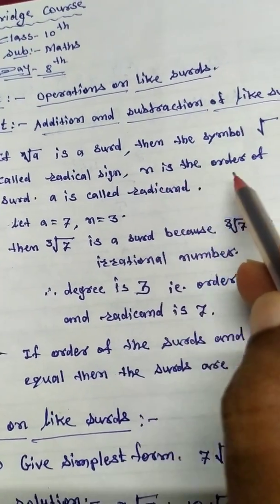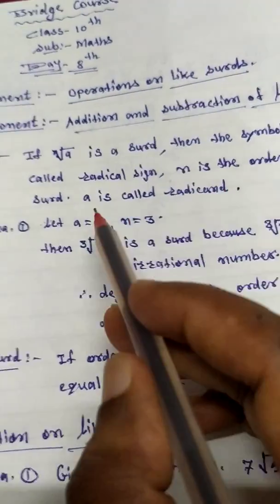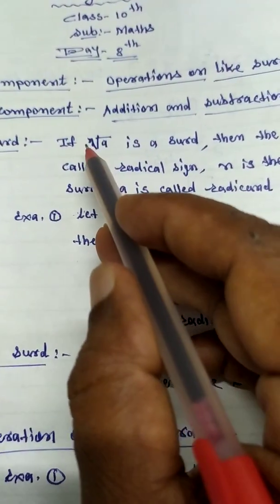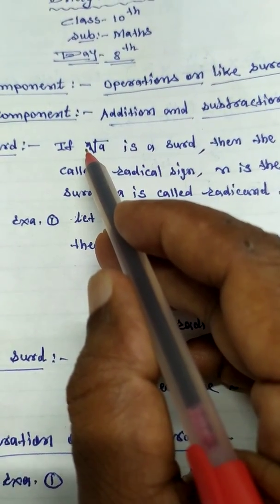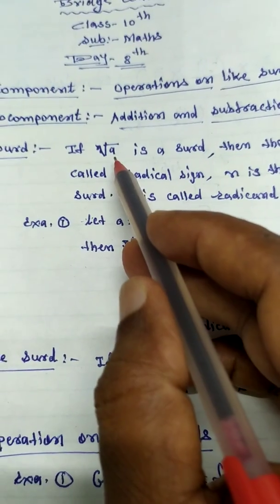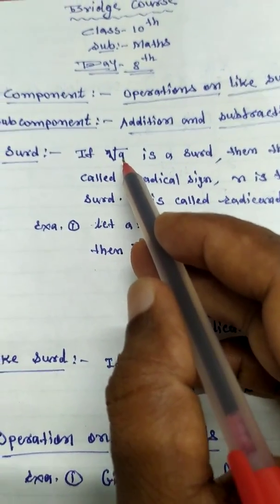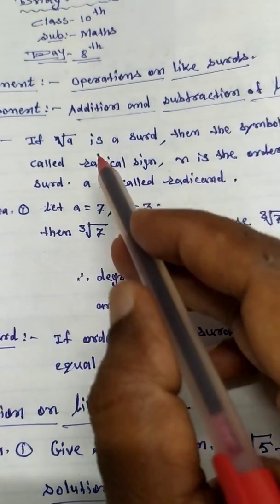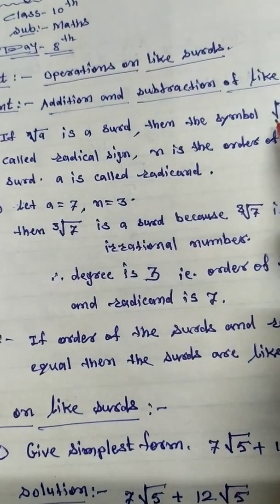And N is the order of the surd. That is, this N is called the order of surd and A is radicand.